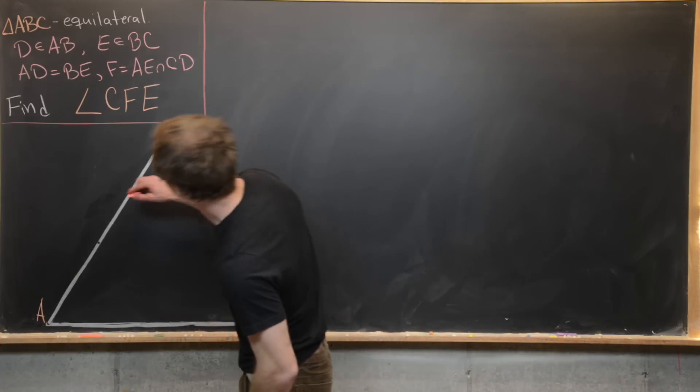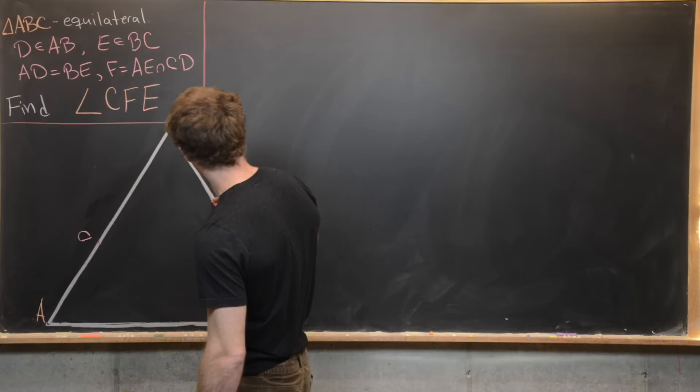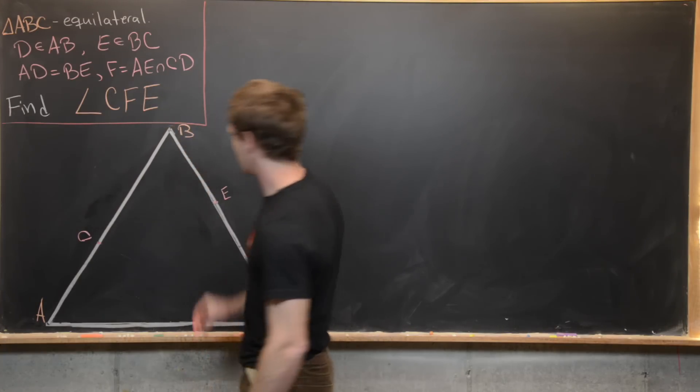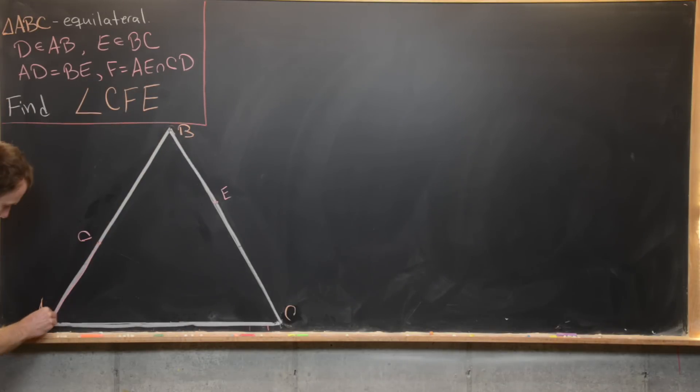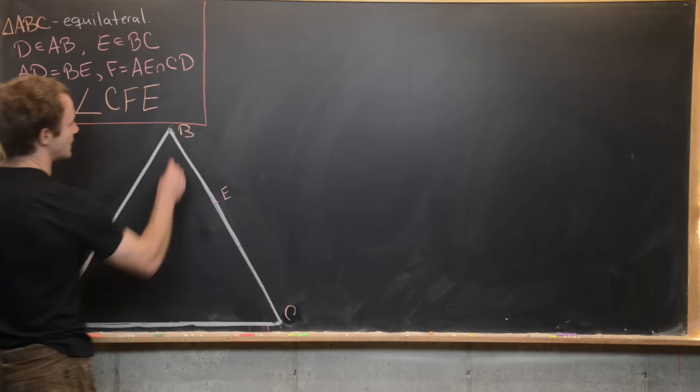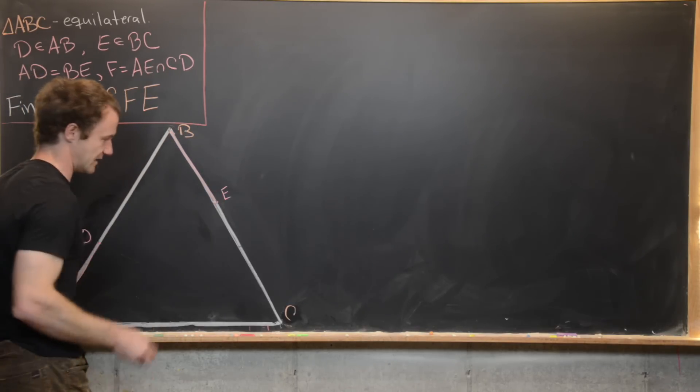So that means I could maybe put D right here and then I could put E right here. And so in other words here we've got AD, which I'll put in pink like this, is equal to BE, which I'll also put in pink like this.